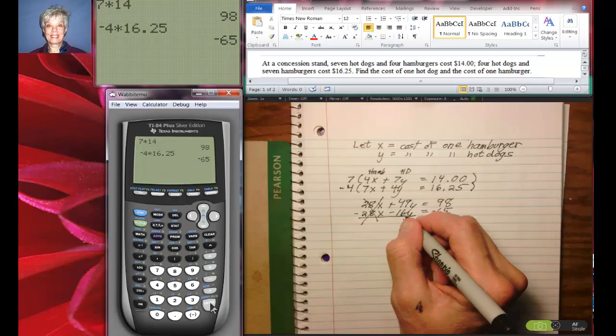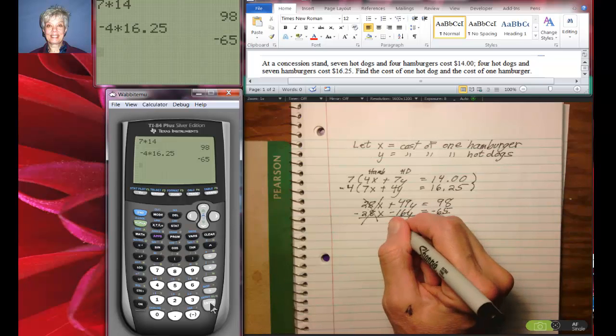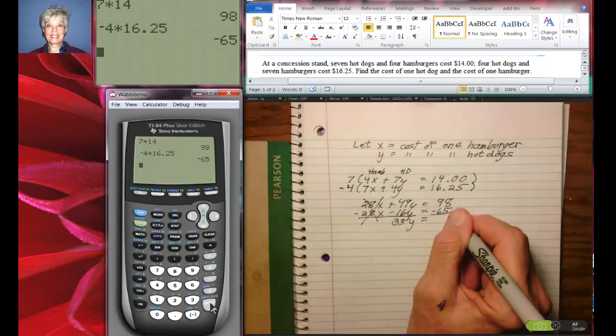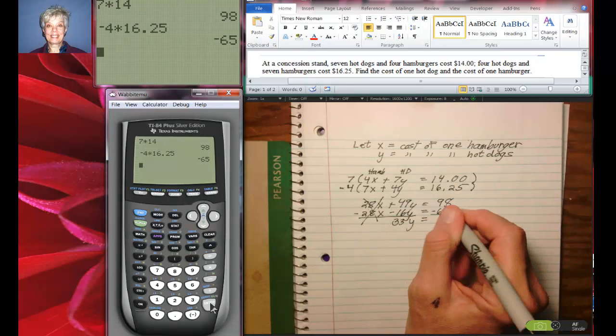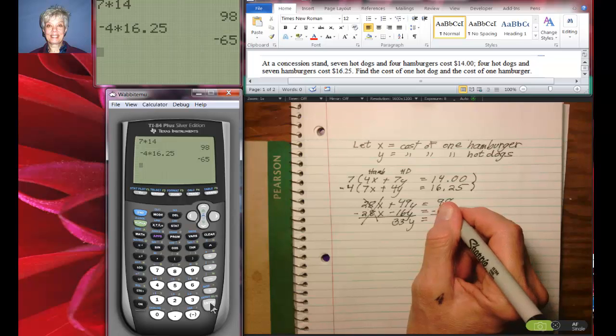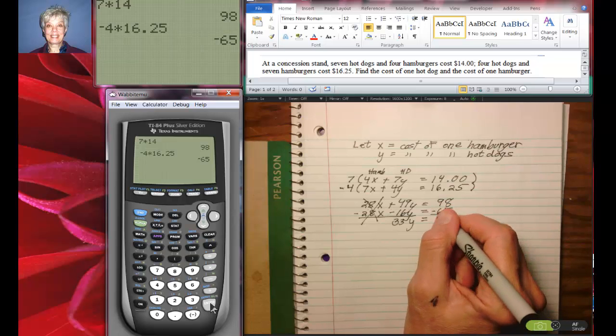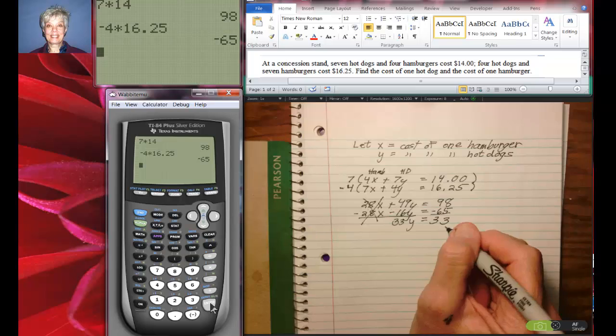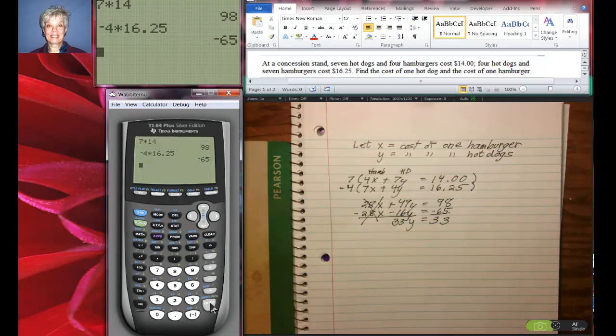49 minus 16 is 33. 98 minus 65 is 33. So 33y equals 33, which means y equals 1. So the hot dog costs $1.